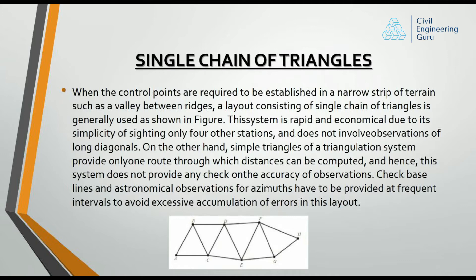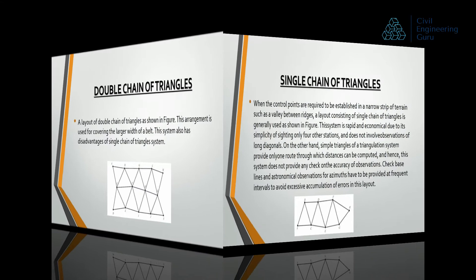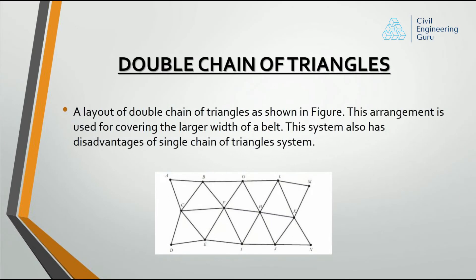Double chain of triangles: a layout of double chain of triangles, as shown in the figure, is used for covering a larger width of a belt. This system also has the disadvantages of the single chain of triangles system.